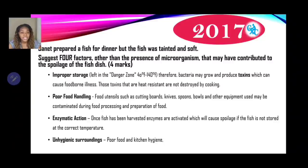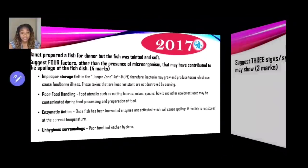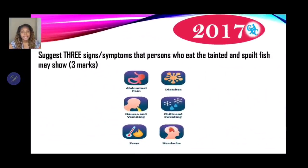Proper temperature management is therefore important. The fourth factor is unhygienic surroundings: poor food and kitchen hygiene can contribute to the fish becoming soft and tainted through contamination. Continuing — state three signs or symptoms that persons who eat the tainted and spoiled fish may show, for three marks.